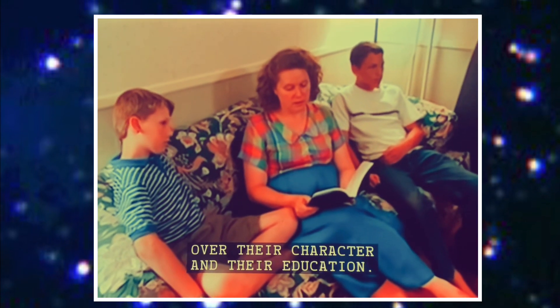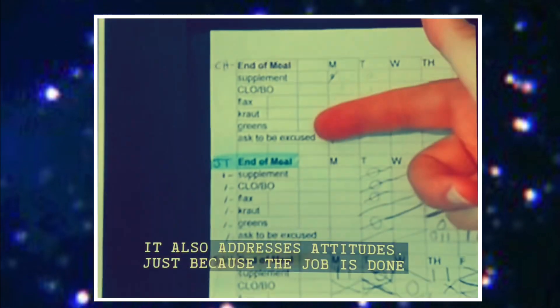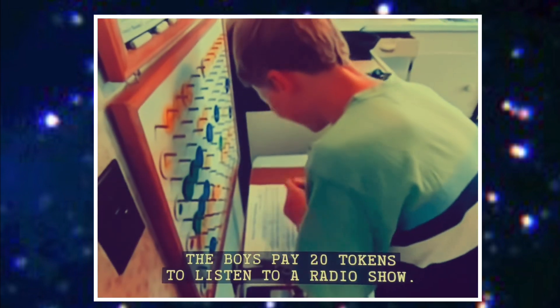[CLIP] It's important we have control over their character and their education. In order to earn privileges, the boys must earn tokens by completing a chore they must then check off on a chart. It also addresses attitudes. Just because the job is done, it does not mean it's necessarily done in the right way. The boys pay 20 tokens to listen to a radio show. It's important to instill in our children that you need to work. The children really didn't have any of the normal things that other people consider normal for children to have, like video games or TV. The most childlike thing that was featured in the episode that the kids had was a radio, and they actually had to pay some of their points and tokens to even listen to the radio. I think it was like 20 points to listen to the radio in general, and the mom actually picked the station for them and things like that.